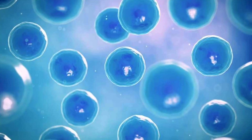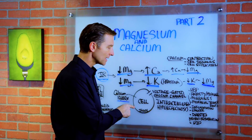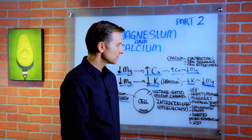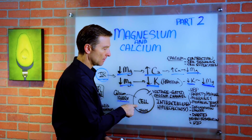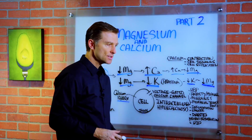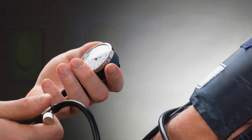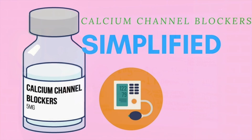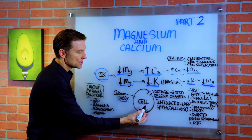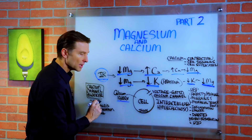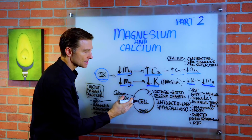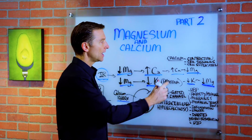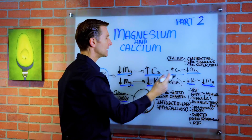If you have too much calcium inside the cell and this ratio is not correct, you develop a condition called intracellular hypercalcinosis — a fancy term for too much calcium inside the cell. This is very dangerous and very common. In fact, a drug many doctors use for high blood pressure is called a calcium channel blocker, which prevents calcium from building up inside the cell. Excess calcium makes the arteries stiffer, raises blood pressure, because the artery is no longer elastic — you get too much contraction and not enough relaxation.